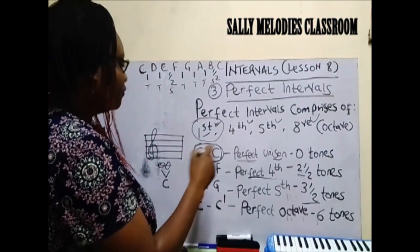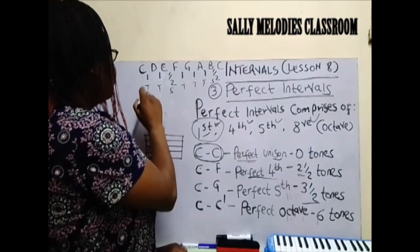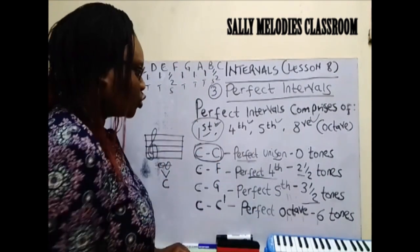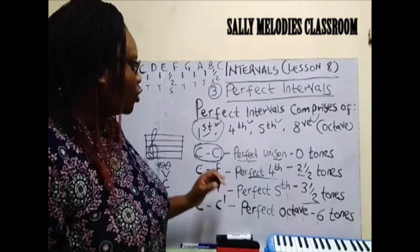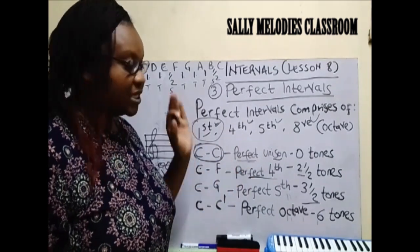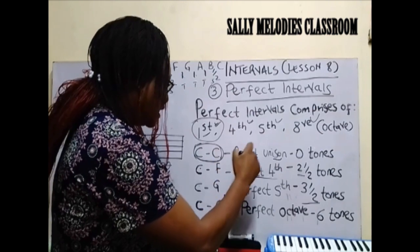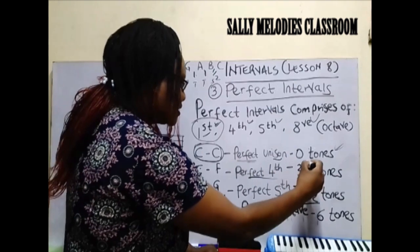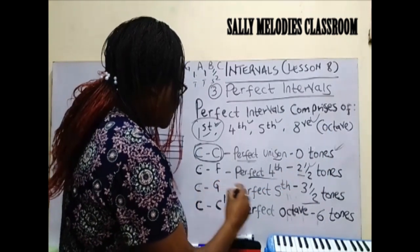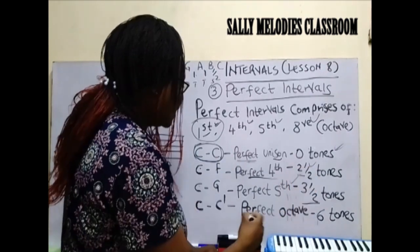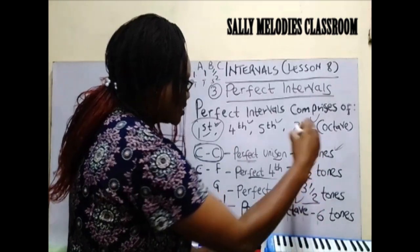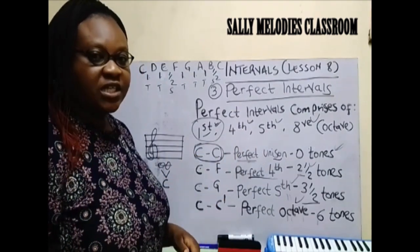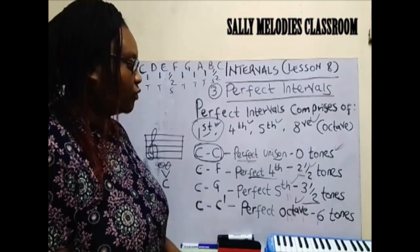Then we have a perfect octave. From C to the other C: five tones plus the two halves becomes six tones. So to know whether an interval is perfect: a unison has zero tones, a fourth has two and a half tones, a perfect fifth has three and a half tones, and a perfect octave has six tones. Anything less than that is not a perfect interval — it is another type of interval.